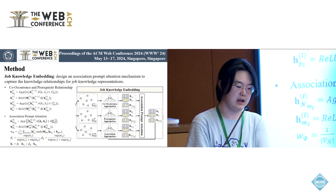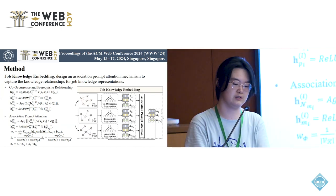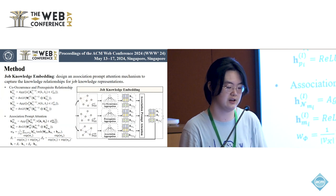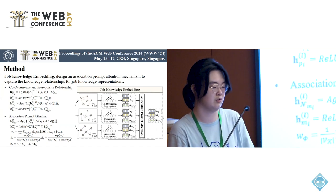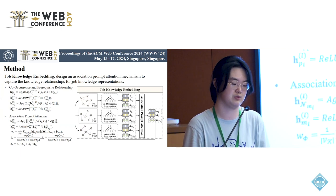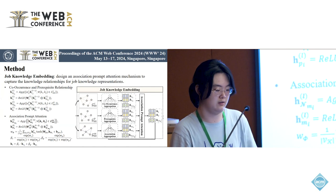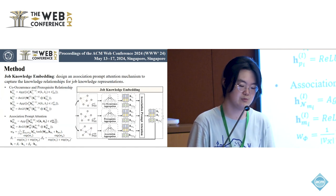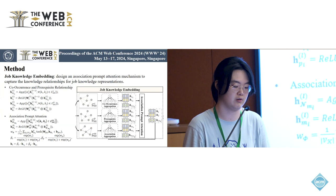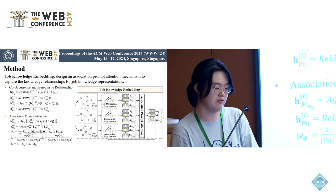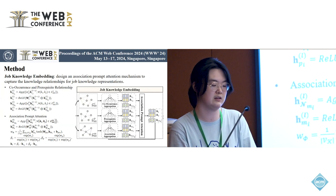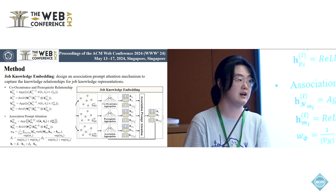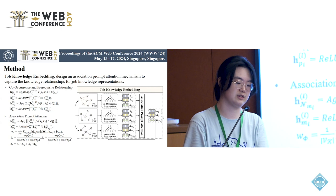In the job knowledge embedding model, to fully harness the inherent rules of job knowledge development and learn better job knowledge representations, we design an association-prompt attention mechanism to capture the co-occurrence relationships and prerequisite relationships between job knowledge. For each job knowledge, we measure the similarity between the projected feature embedding and the association prompt embedding and average them as attention weights. After that, we obtain the final job knowledge embedding with attention weights.